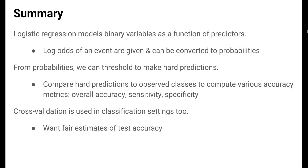In summary, we've introduced logistic regression, a tool for modeling binary variables in terms of predictors. The direct output from logistic regression models is log odds of the event of interest, which can be converted to probabilities in two steps. We can use thresholds on these probabilities to make hard predictions, compare them to actual observed classes, and compute overall and class-specific accuracy measures. As with regression, cross-validation will be our ally in classification settings to get fair estimates of test error and our model's performance on new data.